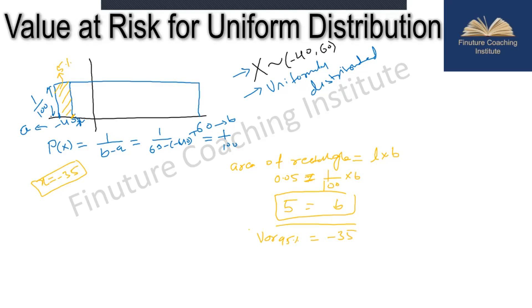The second question is expected shortfall. As you know, expected shortfall is the expected loss given loss has exceeded the VaR amount. This is minus 35 and this is minus 40, so the midpoint would be expected shortfall. Expected shortfall would be the average of minus 40, the extreme loss, and the 95th percentile loss. The midpoint of minus 40 and minus 35 is minus 37.5.